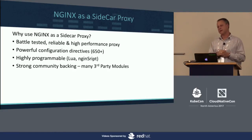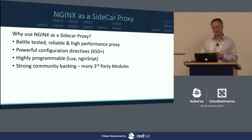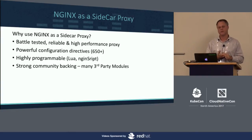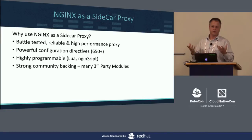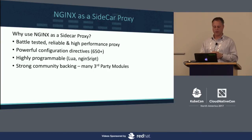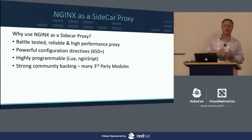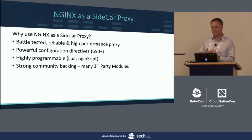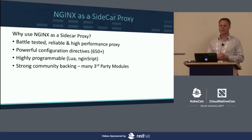What have we done at Nginx? We have four patterns recommended to customers, and the last one comes with a control plane you can manage yourself. Instead of building a lot of custom toolings, you now have the option to deploy Istio and deploy Nginx as the services proxy. Some people asked us why we're using Nginx as a sidecar proxy. Number one: it's battle-tested, it's been around for 13 years, with powerful configuration directives — over 650 of them.